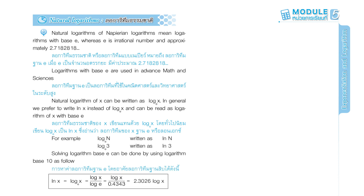For example, log n base e is written as ln n, and log 3 base e is written as ln 3. Solving logarithm base e can be done by using logarithm base 10 as follows: ln x equals log x base e equals log x over log e equals log x over 0.4343 equals 2.3026 log x.